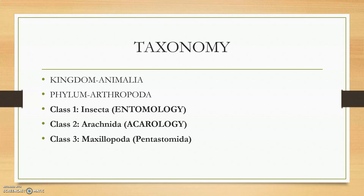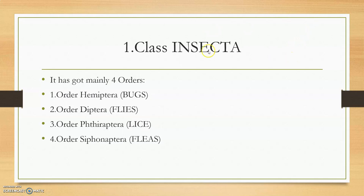The study of class Arachnida is called acarology, and the study of insects is called entomology. You should first make it clear that entomology is the study of insects and acarology is the study of Arachnida. Class 3 — Maxillopoda or Pentastomida — was actually a different phylum in many other books, but according to the latest classification it has been moved into phylum Arthropoda as a class.